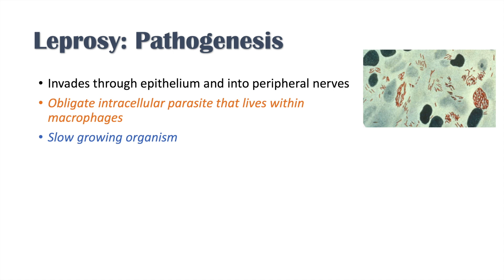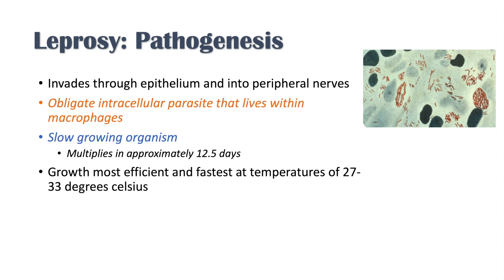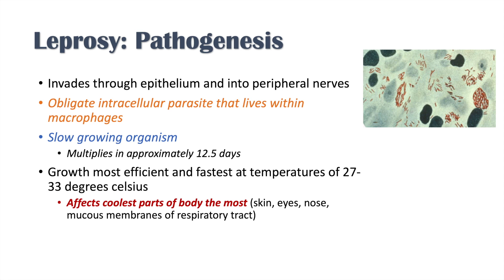The bacteria that cause leprosy are slow-growing organisms, multiplying only every 12.5 days. They grow most efficiently at temperatures slightly below basal body temperature — between 27 and 33 degrees Celsius. This is why leprosy affects the coolest parts of the body the most, including the skin, the eyes, the nose, and the mucous membranes of the respiratory tract such as the larynx.